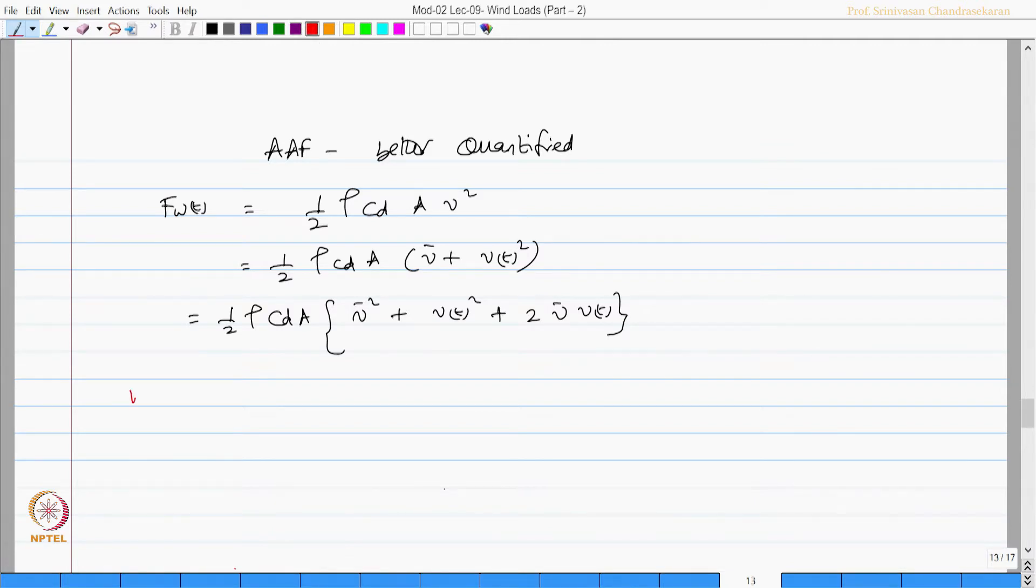We also know that from the literature that V bar is much greater than V of t. We can also neglect V of t square. Doing that we can now say F w of t is half rho CD A V bar square plus 2 V bar V of t, which can be said as half rho CD A V bar V of t.